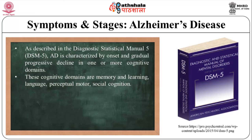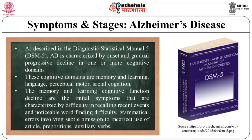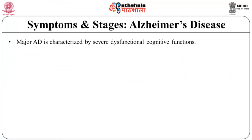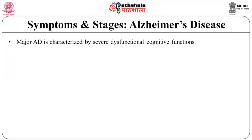These cognitive domains are memory and learning, language, perceptual motor, and social cognition. The memory and learning cognitive function decline are the initial symptoms, characterized by difficulty in recalling recent events, noticeable word-finding difficulty, and grammatical errors involving subtle omission to incorrect use of article prepositions and auxiliary verbs. Major Alzheimer's disease is characterized by severe dysfunctional cognitive functions like perceptual motor and social cognition, along with further degradation of memory, learning, and language cognitive functions.